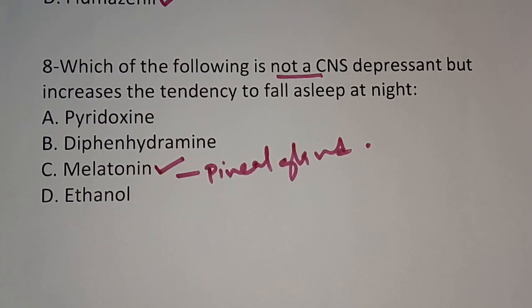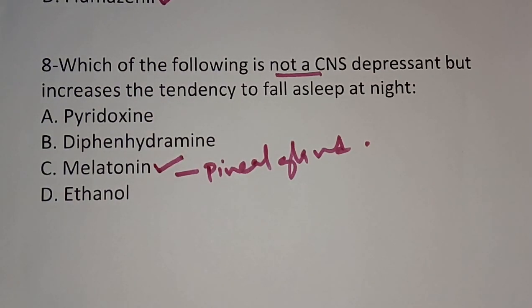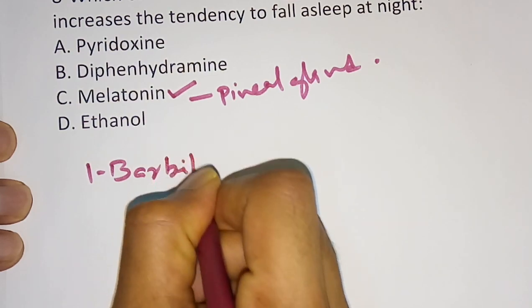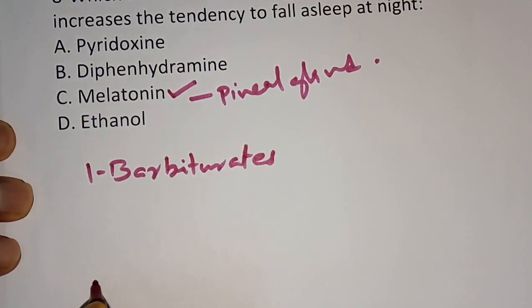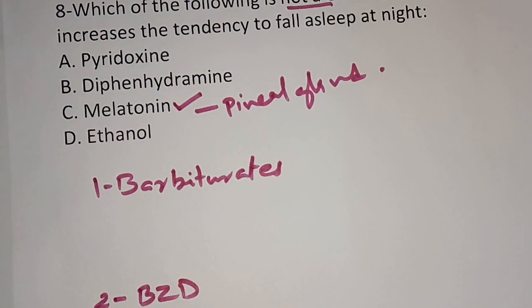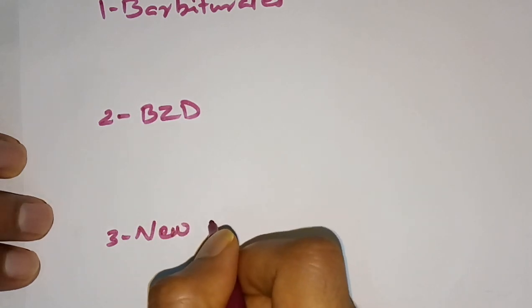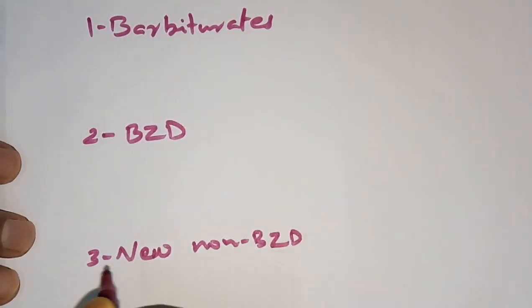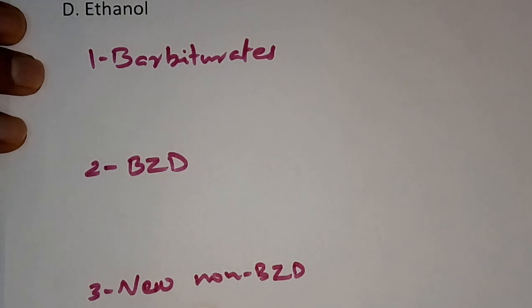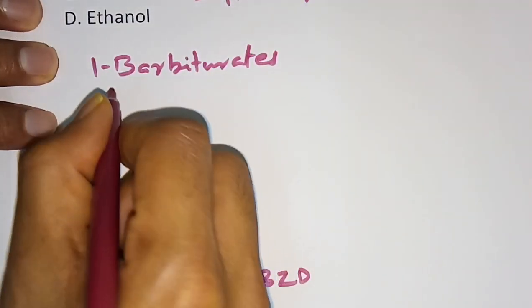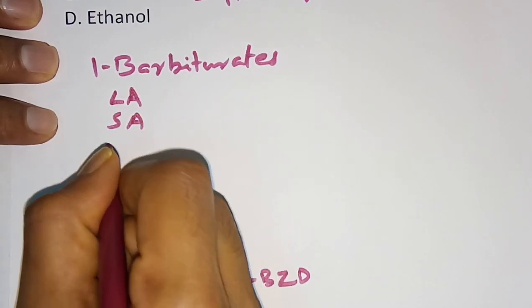Now we will see some important points in this chapter on sedative hypnotics. First, the classification. Hypnotics and sedatives are classified mainly into three types: one is barbiturates, second is benzodiazepines, and third is newer non-benzodiazepine hypnotics. Barbiturates are further classified into three types: long-acting, short-acting, and ultra-short-acting.